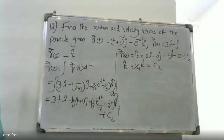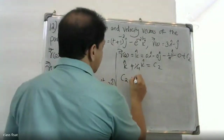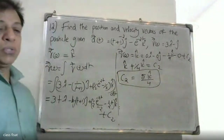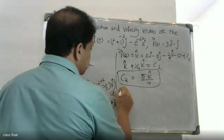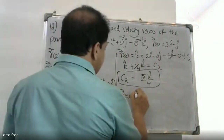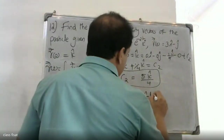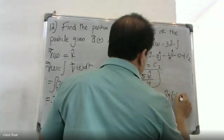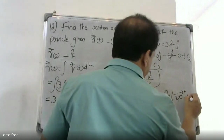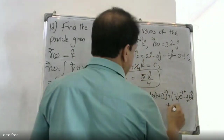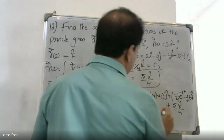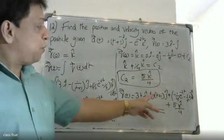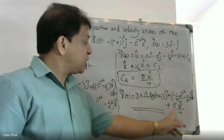C2 is equal to 5k divided by 4. Therefore, the position vector r of t equals 3ti minus log t plus 1 into j, plus minus 1 by 4 e raised to minus 2t, minus 1 by 2 t, plus 5 by 4 k. This is the position vector.